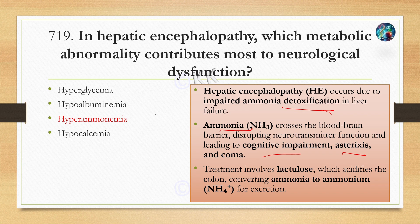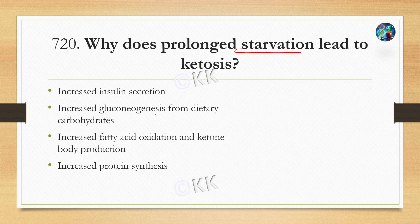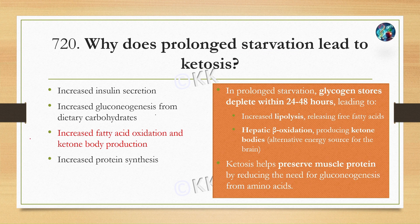Next question: why does prolonged starvation lead to ketosis? Option A: increased insulin secretion. Option B: increased gluconeogenesis from dietary carbohydrates. Option C: increased fatty acid oxidation and ketone body production. Option D: increased protein synthesis. The correct answer is Option C: increased fatty acid oxidation and ketone body production.